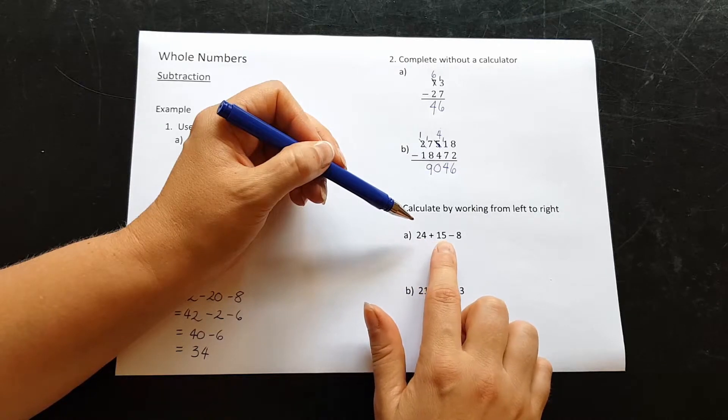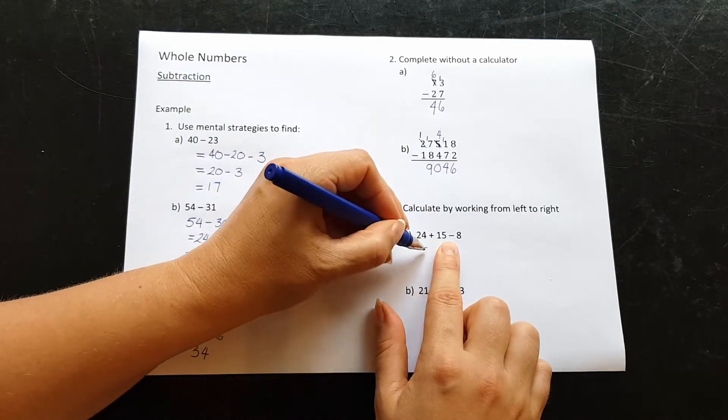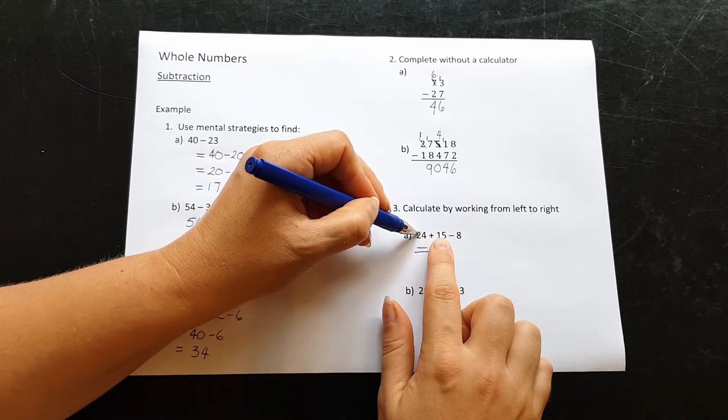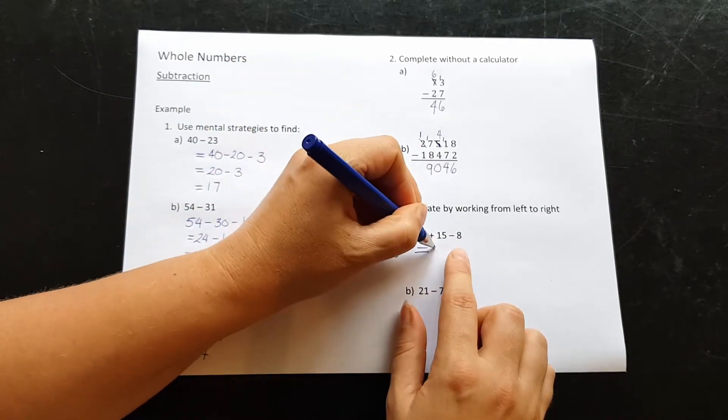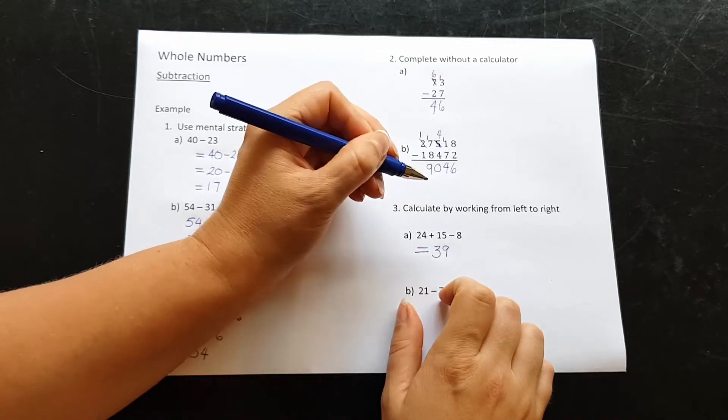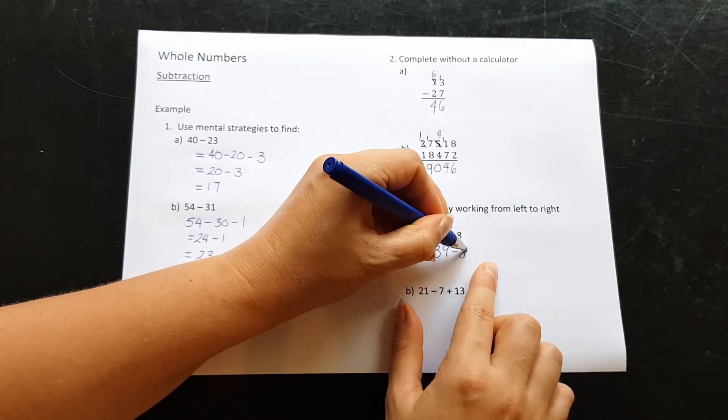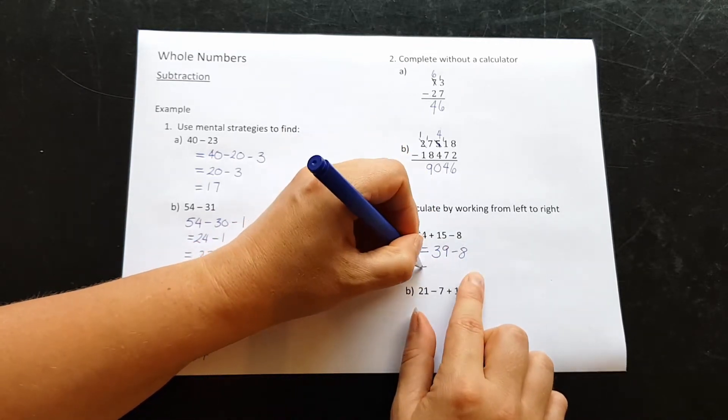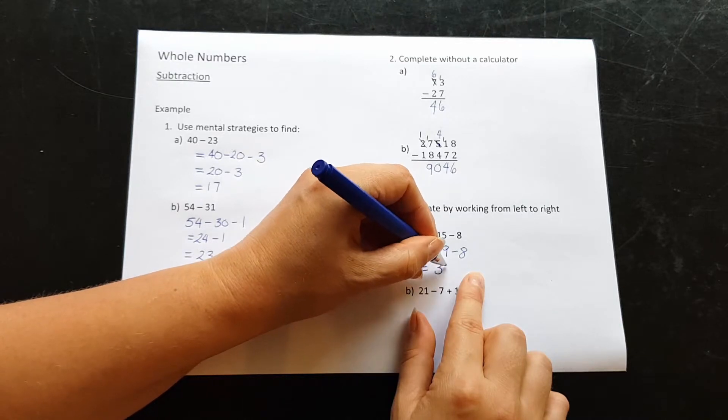So 24 plus 15. To add those together, we can add the tens together to get 30 and add the ones together to get 9. We still have to take away our 8 though. 8 easily gets subtracted from 9 and would have 1 left. So my answer is 31.